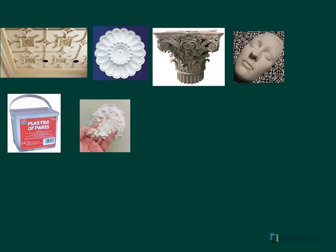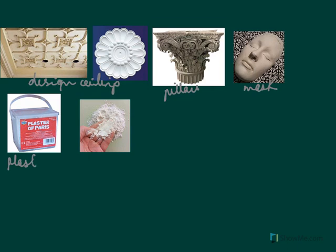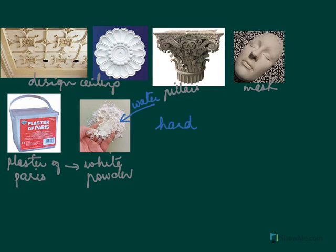We are quite familiar with decorative designs on ceilings. Not only on ceilings, you have them on pillars; sometimes you have masks, toys, and even idols. All these materials are made from plaster of Paris. This is a picture of plaster of Paris — it is a white powder. When you add water to this white powder, it hardens and becomes a hard mass.